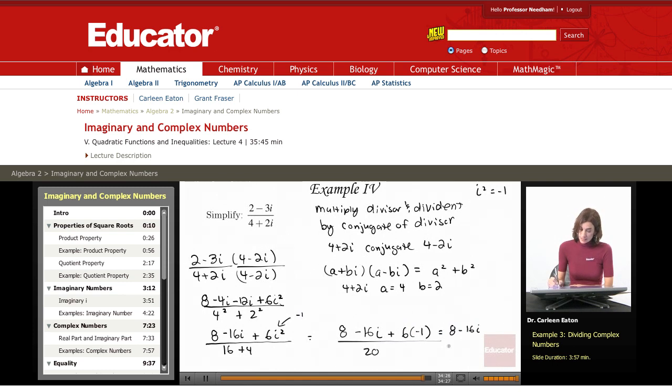So this gives me 8 minus 16i. This is negative 6 over 20. I can simplify a bit more because 8 minus 6 is 2. This is 2 minus 16i over 20 is my solution.